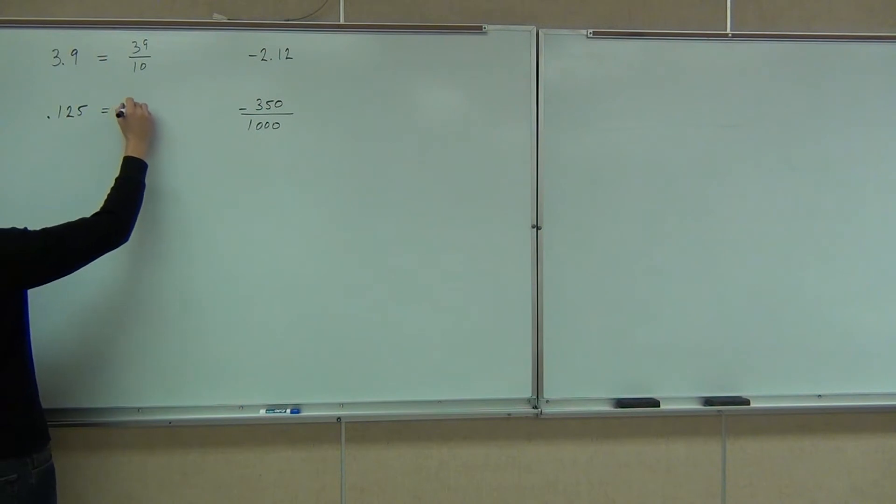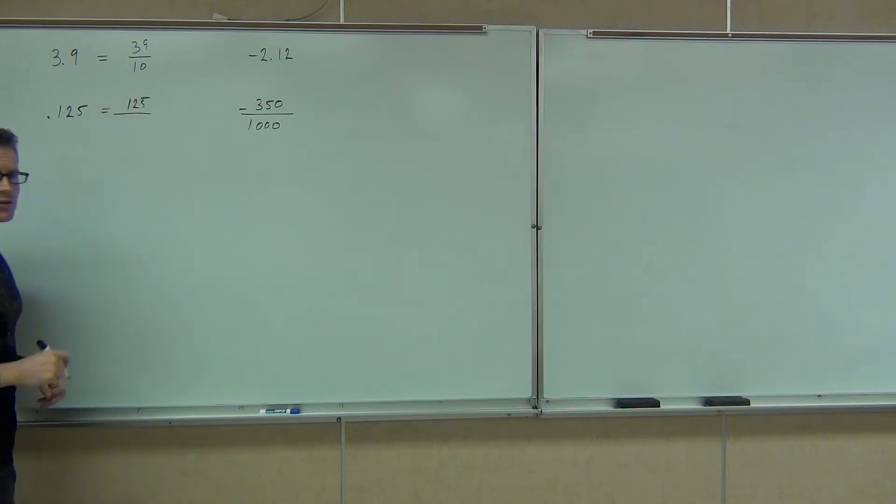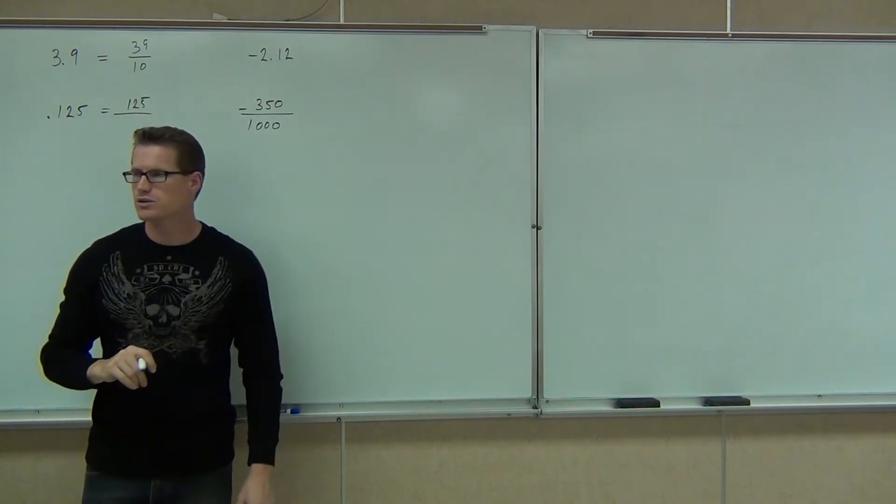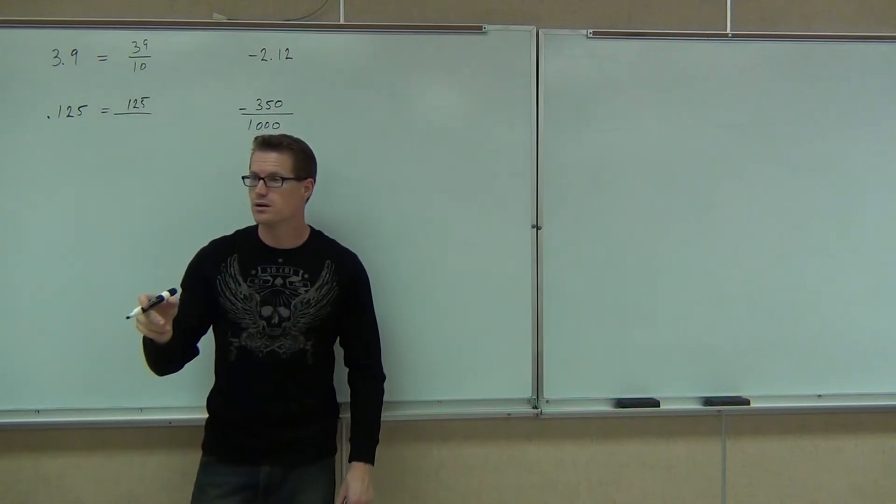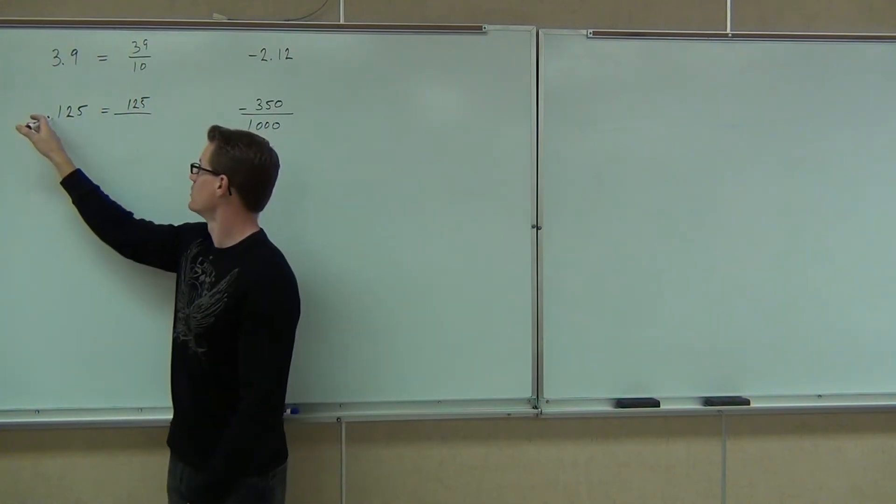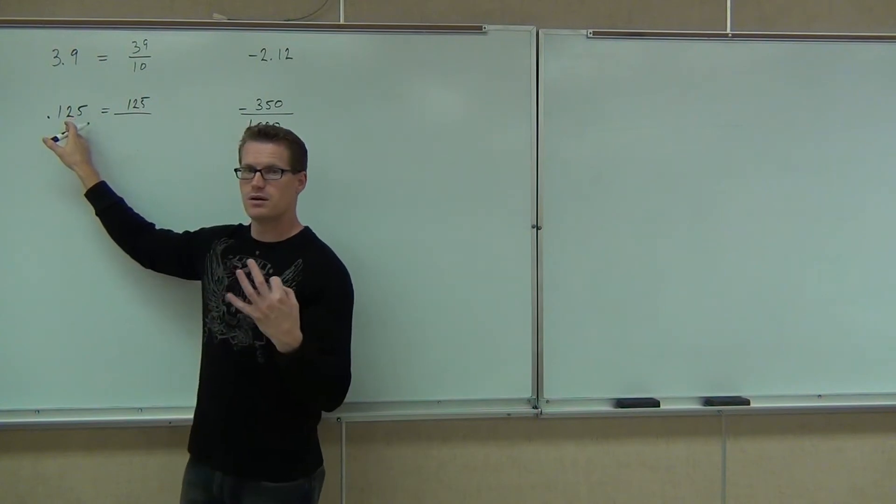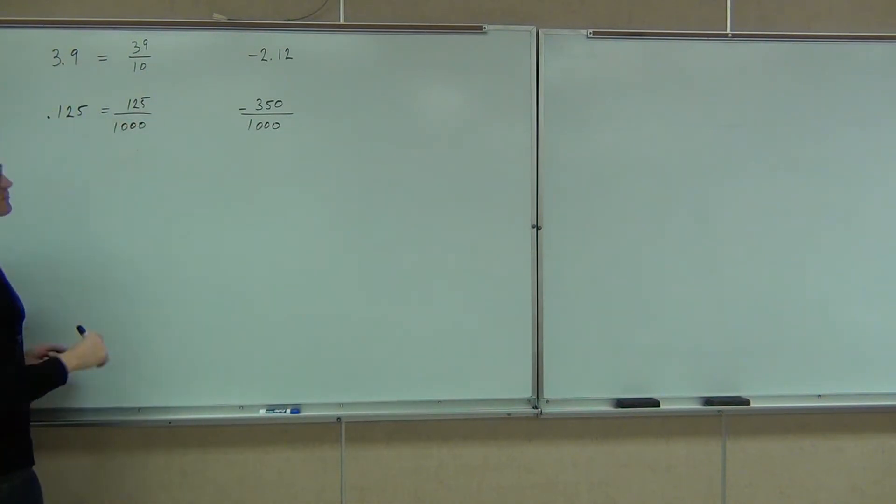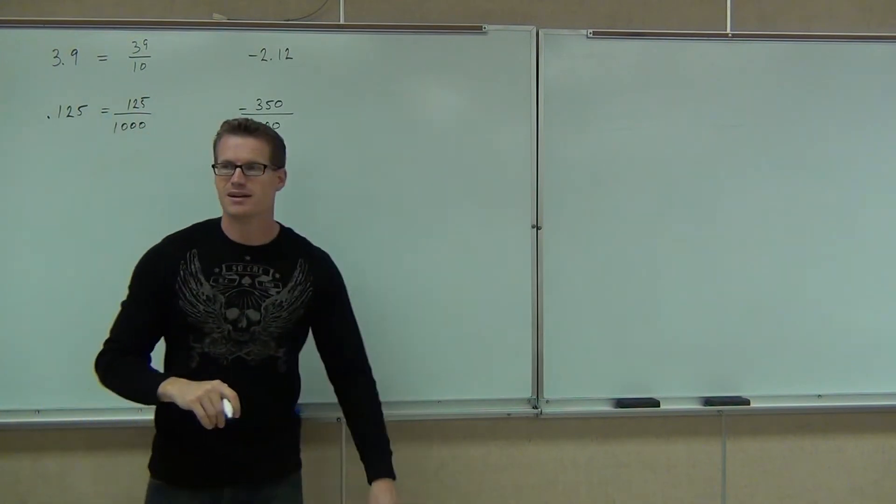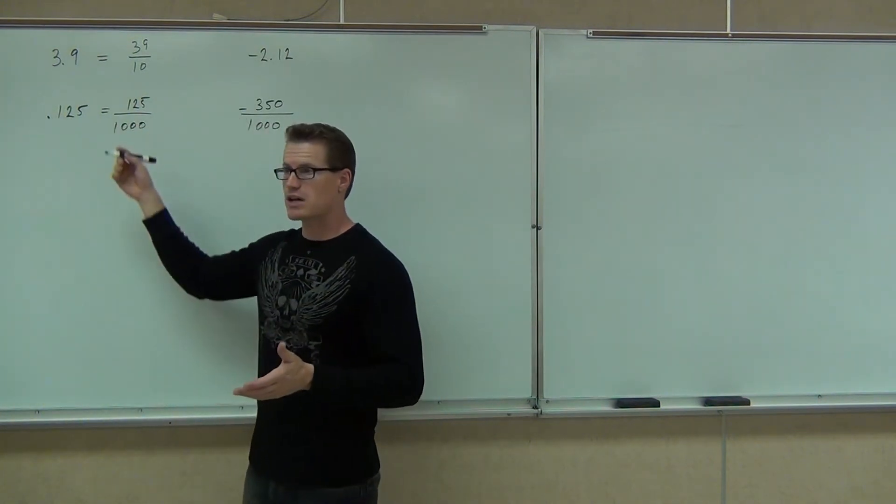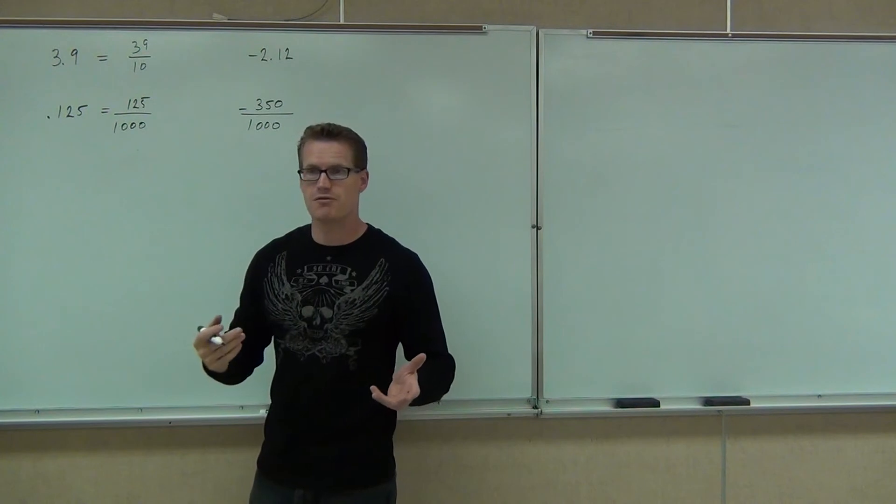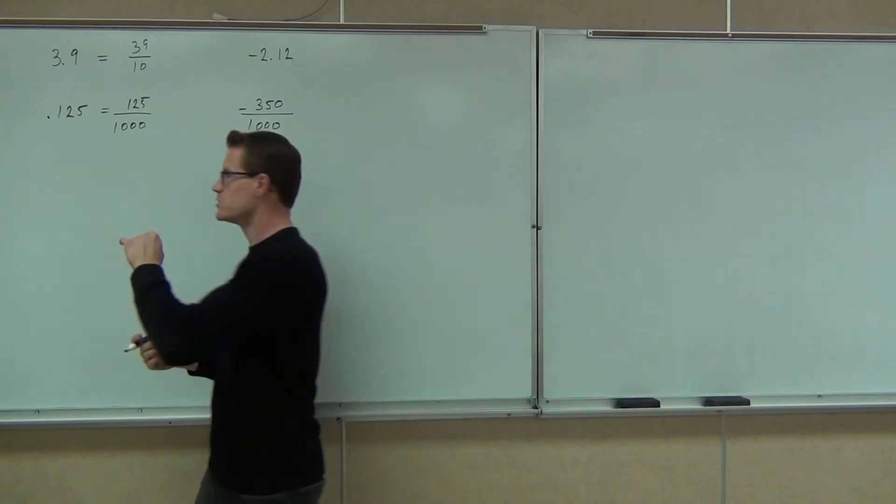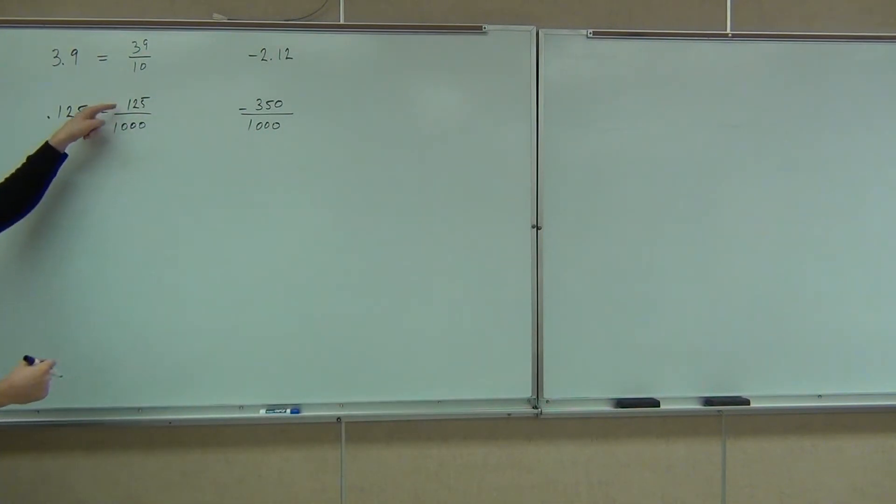0.125. I'm hoping you've got 125 over? 100. How many spots did you move? 1,000. How many spots did you move the decimal? 3. How many zeros did you have then? 3. That's going to be? 1,000. That's right. 1,000. You can reduce that. You actually can reduce that and you should reduce that if you can. If you can reduce your fraction, do it.